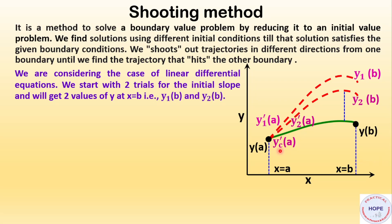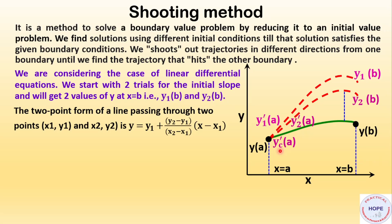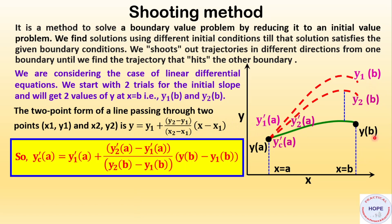Instead of doing multiple shootings, we consider the case of linear differential equations. We start with two trials for the initial slope and will get two values of y at x equal to b: y1(b) and y2(b). The two-point form of a line passing through two points (x1, y1) and (x2, y2) is given by this equation. So if we replace y by initial slope y1' and x by final value of y, we get an equation to calculate the correct slope.